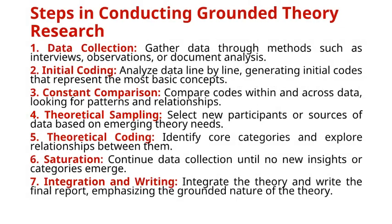Steps in conducting Grounded Theory research: 1. Data Collection: Gather data through methods such as interviews, observations, or document analysis. 2. Initial Coding: Analyze data line by line, generating initial codes that represent the most basic concepts. 3. Constant Comparison: Compare codes within and across data, looking for patterns and relationships.